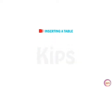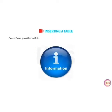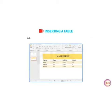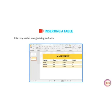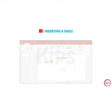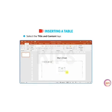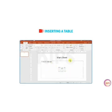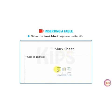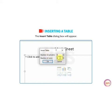The next topic is inserting a table. A table provides the additional feature of organizing information or data in a tabular form. A table is a grid of cells and columns arranged in rows. It is very useful in organizing and representing data in an effective manner. To insert a table, first select the Title and Content layout slide in your presentation, then click on the Insert Table icon on the slide. The Insert Table dialog box will appear. You can define the number of columns and rows and then click OK.